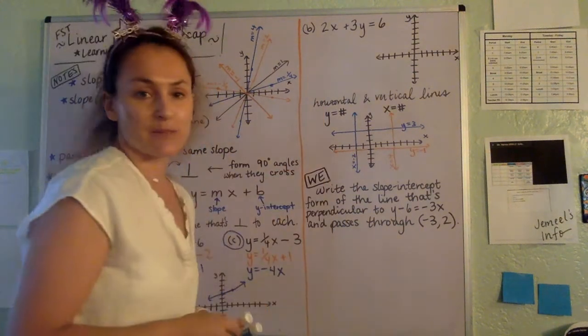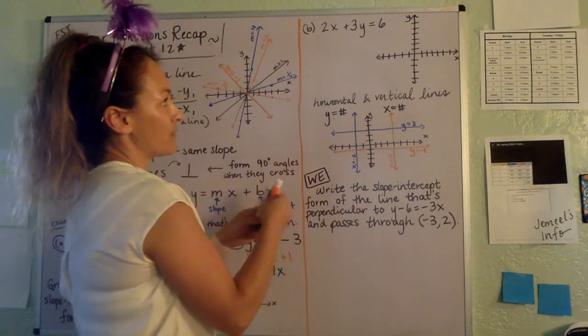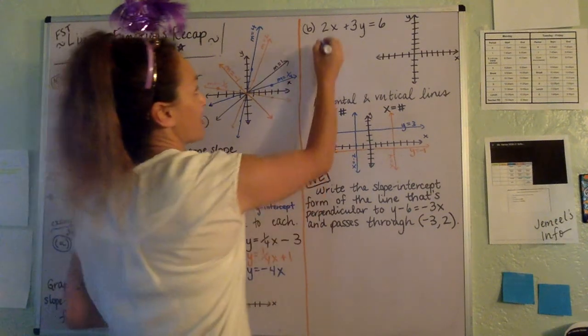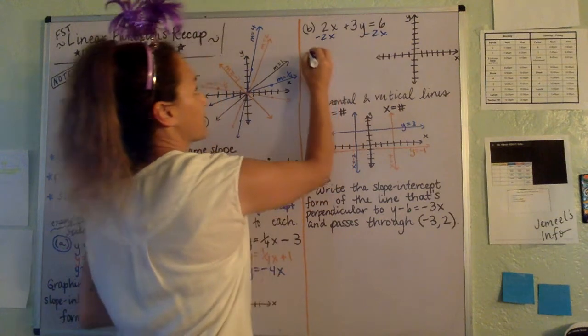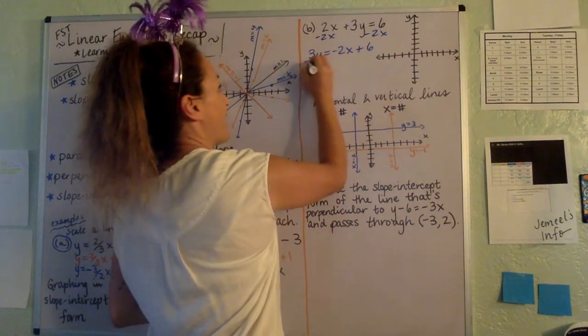Let's look at one more. 2X plus 3Y equals 6. This one is not in Y equals MX plus B form, but we can get it there if we go ahead and just subtract the 2X.